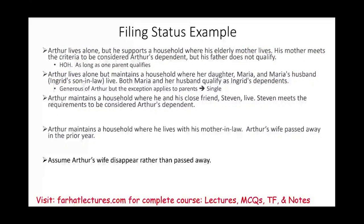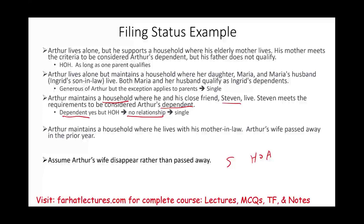Scenario three: Arthur maintains a household where he and his close friend Stephen live. Stephen meets the requirements to be considered a dependent. Arthur is single, so it's either single or head of household. However, for head of household qualification, the relationship test must be met. Being a member of the same household — which Stephen is — does not satisfy the relationship requirement for head of household filing status. Even though Stephen is a dependent, there is no qualifying relationship. Therefore, Arthur must file as single.